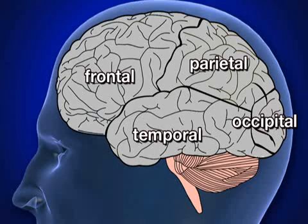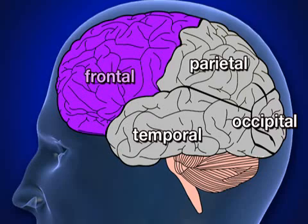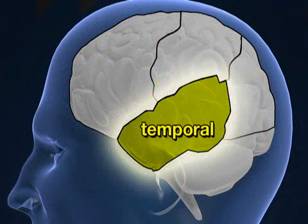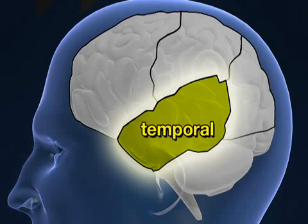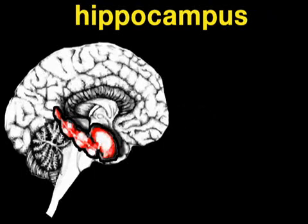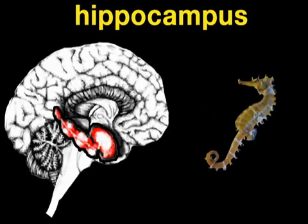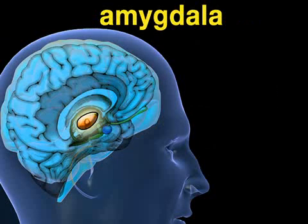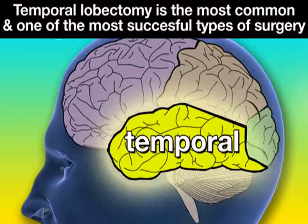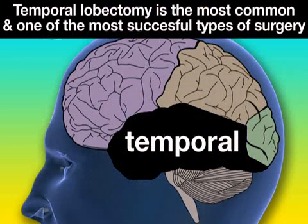The brain is comprised of four lobes called the frontal, temporal, parietal, and occipital lobes. Seizures most often arise from one or both temporal lobes. In the deep front part of the temporal lobes are located the most seizure-prone structures in the brain: the hippocampus, which is Greek for seahorse, and the amygdala, which means almond. Because of this, temporal lobectomy is the most common and one of the most successful types of resective surgery.